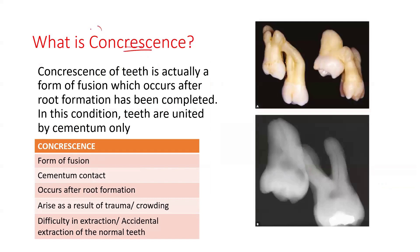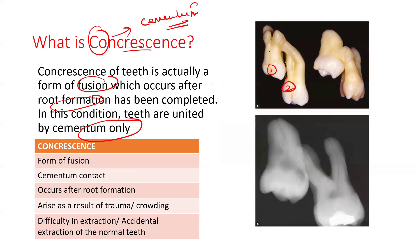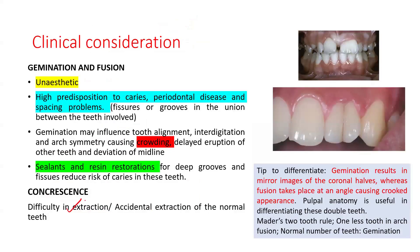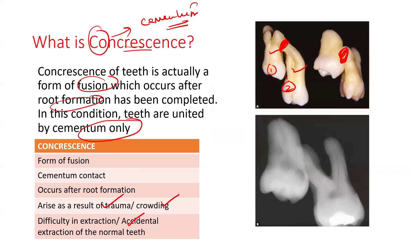Coming to concrescence — remember: C for concrescence, C for cementum. Concrescence is a type of fusion where root formation is complete and the teeth are united only by cementum. As you can see in this picture, you have two complete teeth with complete root formation, which have combined together via cementum. This may occur due to trauma or crowding. An important clinical note is difficulty in extraction — if you have not taken an X-ray beforehand, you might accidentally extract both teeth.